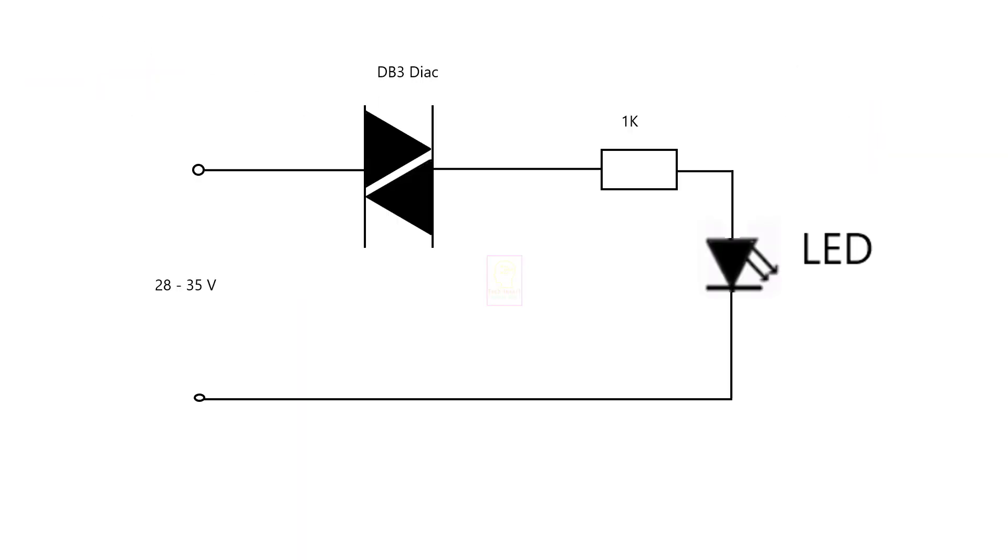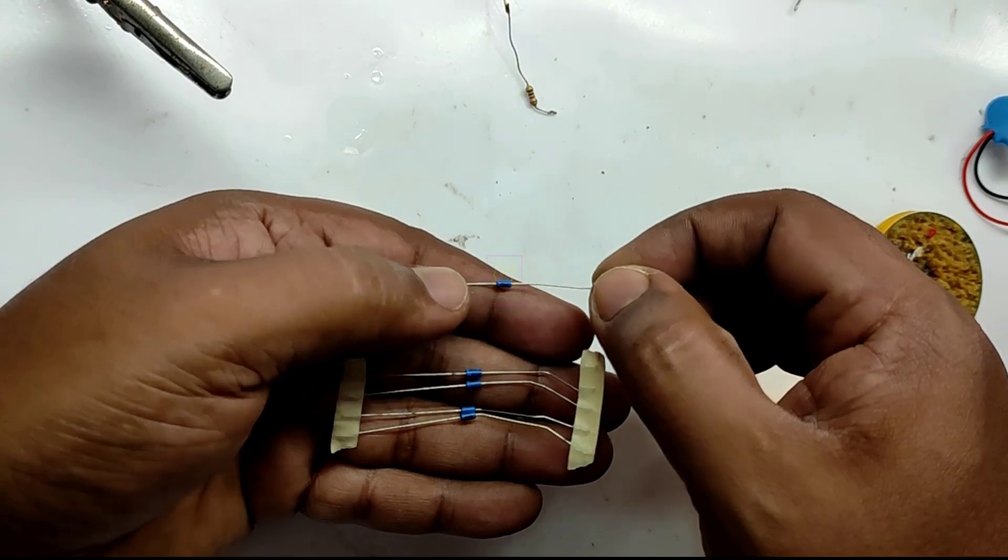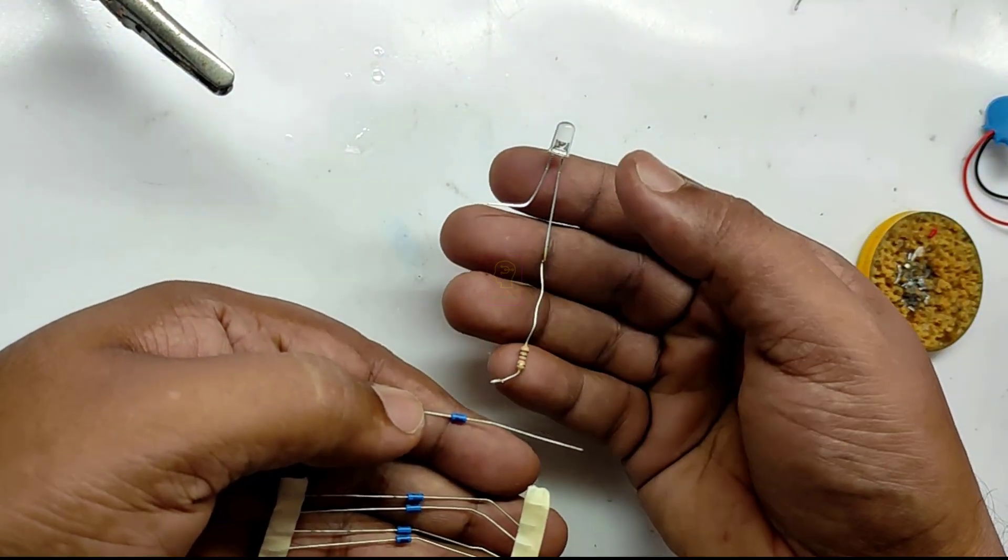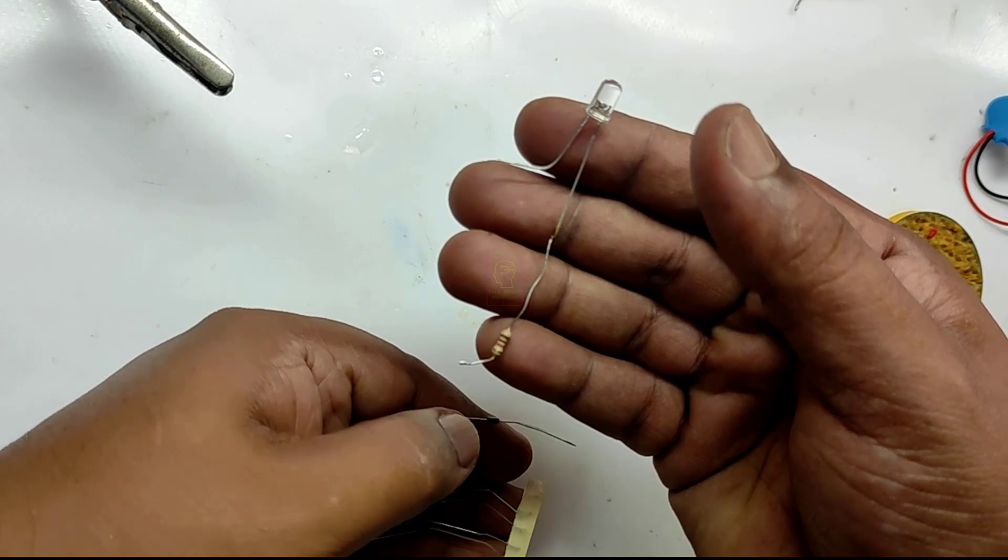This is the circuit we are going to make for checking the behavior of a DIAC. A zener diode has a sharp breakdown voltage, but a DIAC is a bit different. I will give you an example.